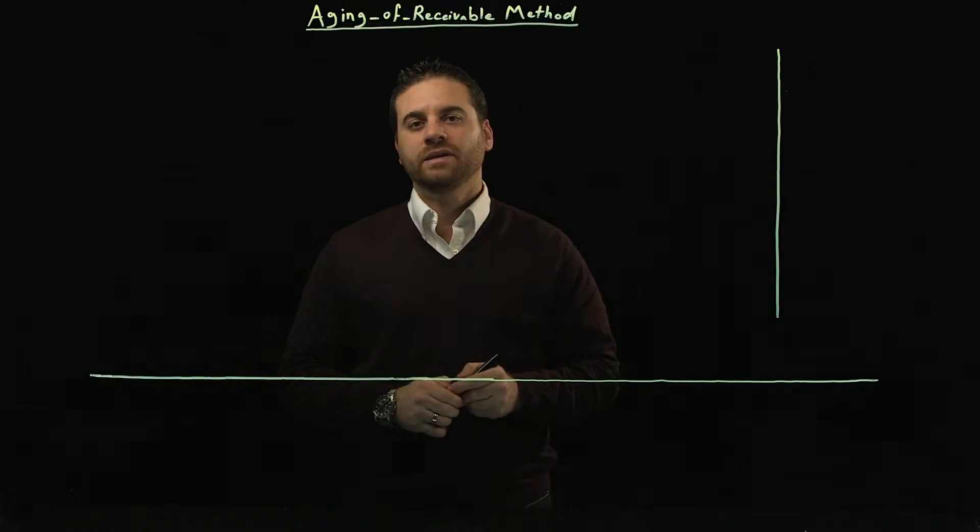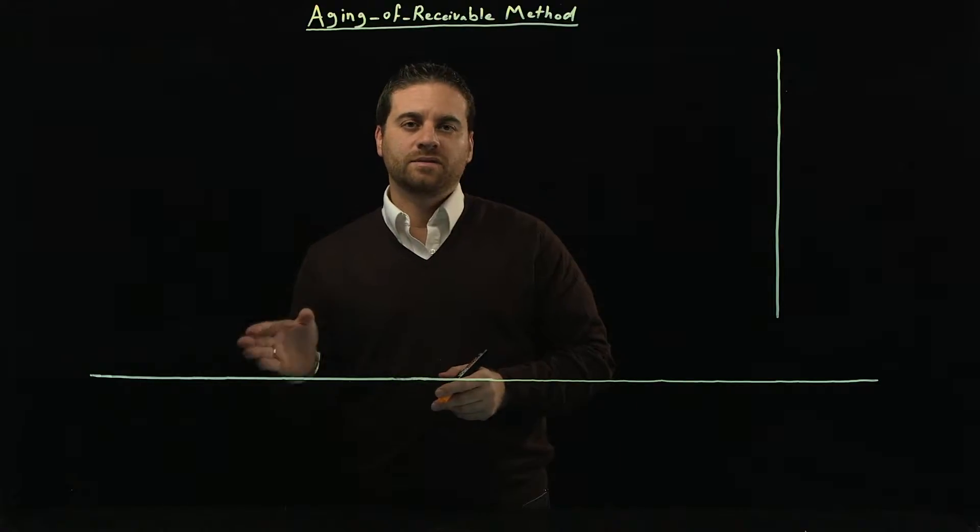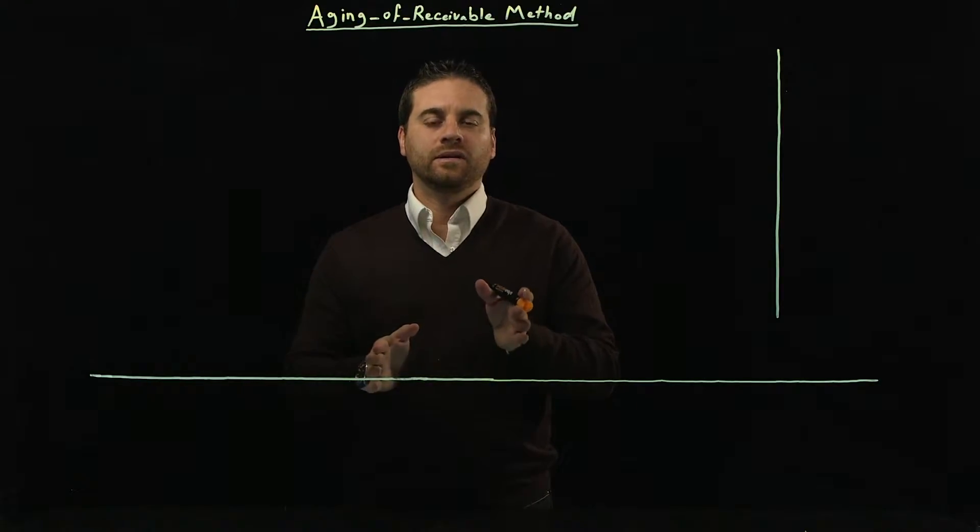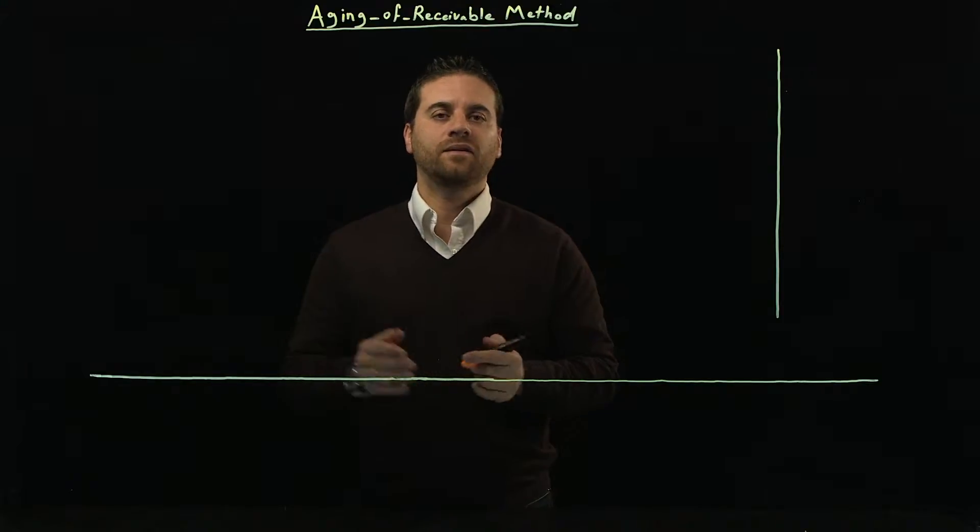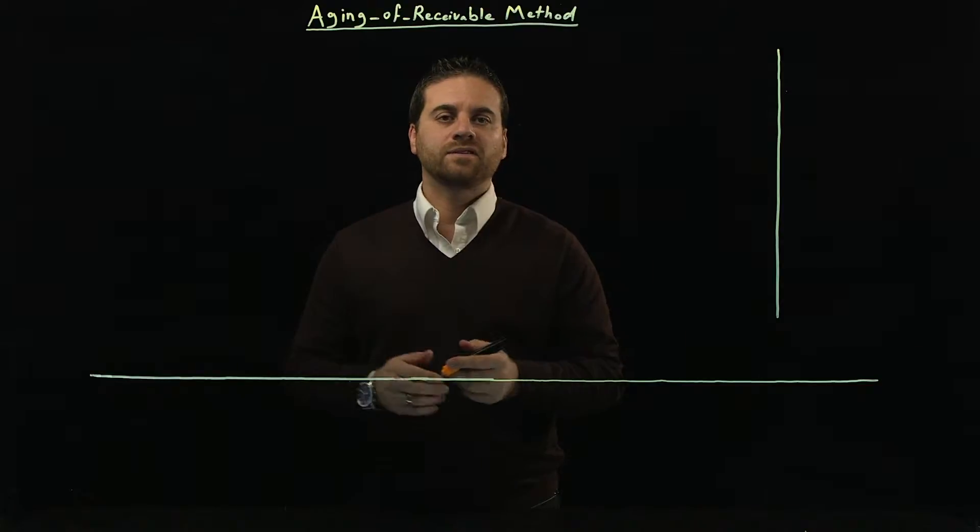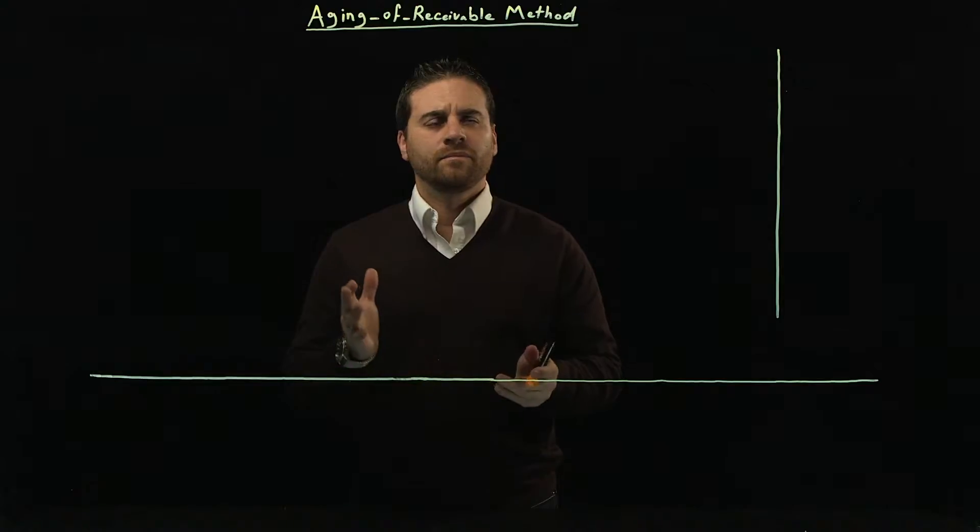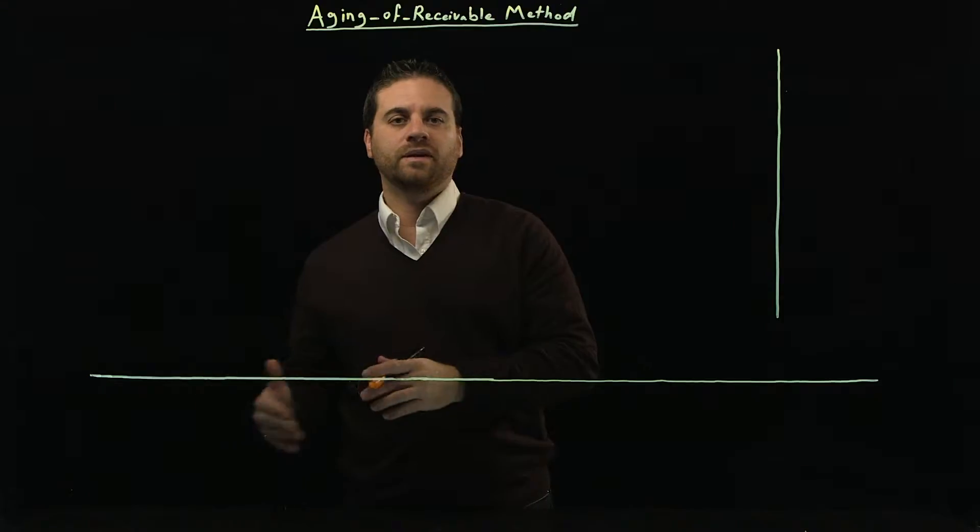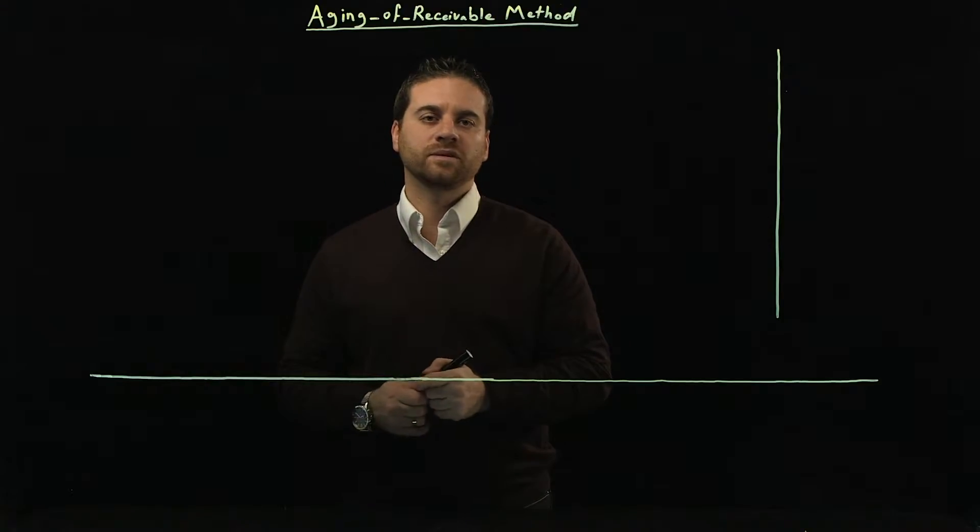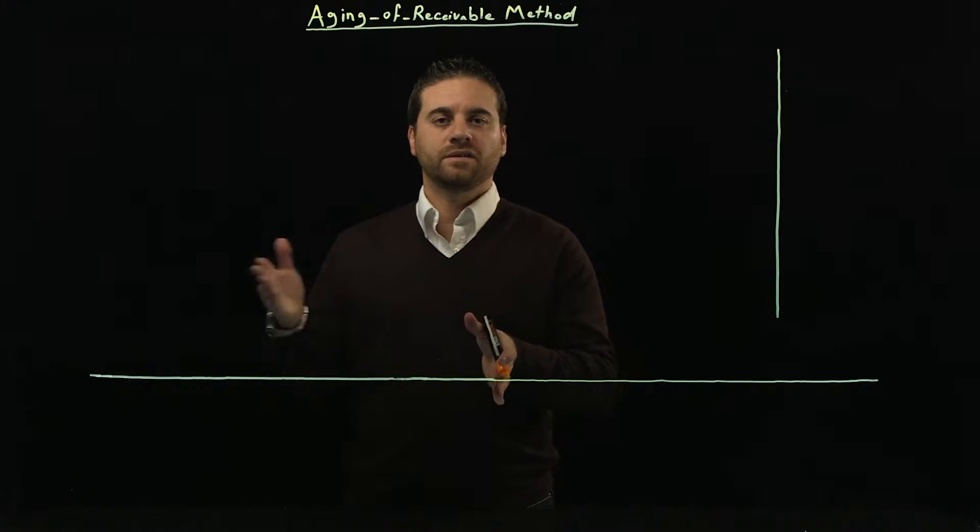What I mean is we're going to look back at the amounts owed by customers to us, and then we're going to break it down based on the age of that amount owed by the customer. So let's say we have $5,000 owed by a group of customers between zero to 30 days. And then there is another amount that is also owed by the customers, also part of the balance of accounts receivable.